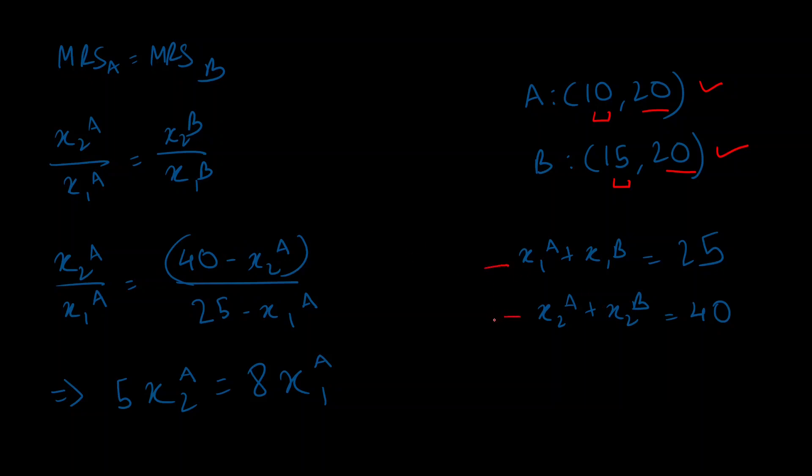Now you can simplify this and you'll get this equation: 5x2a equals 8x1a, and that is your equation for the contract curve which you had to solve. So that's all you got to do, you equate the MRSes and you are done. All right, hope you got it. I'll see you in the next one.